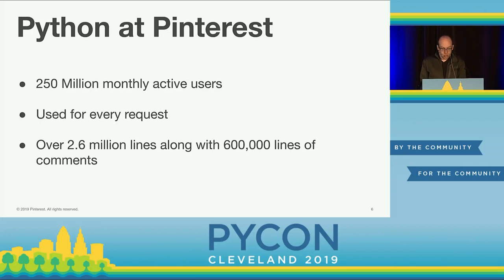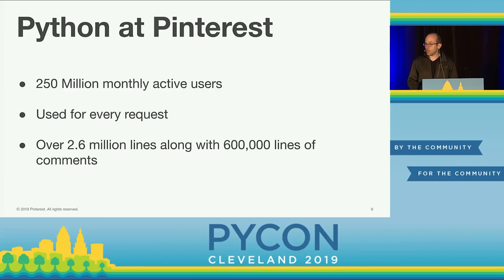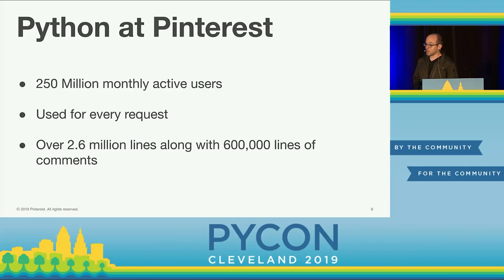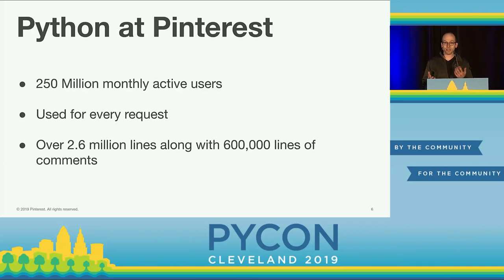At Pinterest, we use Python to serve over 250 million monthly active users, and every single request to Pinterest — whether on mobile or desktop, in Europe or the US — goes through Python. It's been that way since day one, starting with a big Django app. We have over 2.6 million lines of Python code along with 600,000 lines of comments, so a lot of challenges that are simple in a small codebase become exceedingly difficult at this scale.